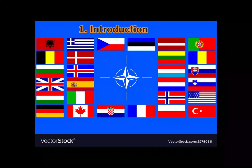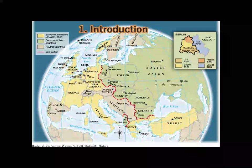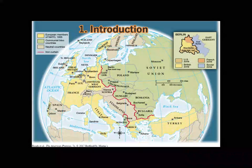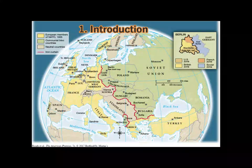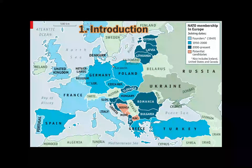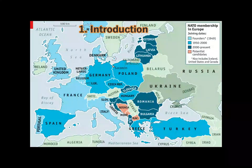NATO was established with several key objectives. The main objective of NATO was the containment of the USSR and reducing its influence in Europe. In 1949, there were only 12 founding member countries in NATO. At present, there are 31 members in NATO.